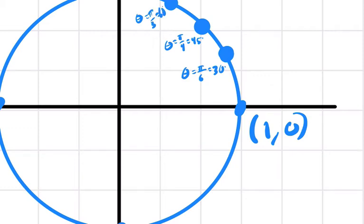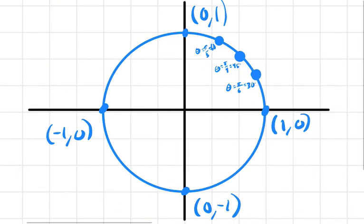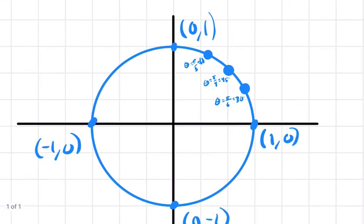So these are our three landmark points in the first quadrant that are used to build the whole unit circle template. And the points, watch how cool this is. The points for each of these, I'm going to label it like this.